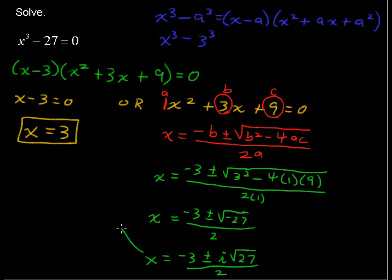I'm going to write this up here under our other solution. We also have x equals 3 as one of the solutions, and x equals negative 3 halves plus i times the square root of 27 over 2, and x equals negative 3 halves minus i square root of 27 over 2.